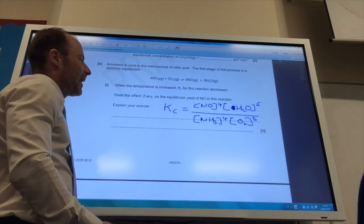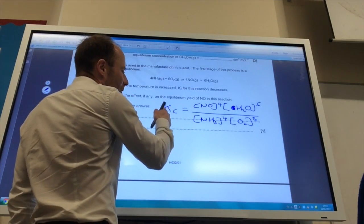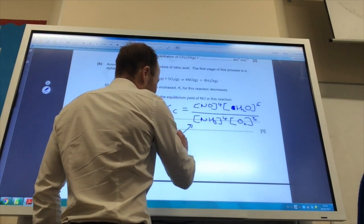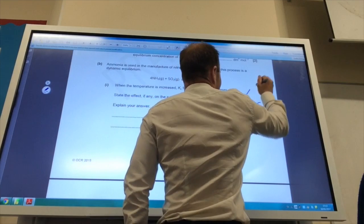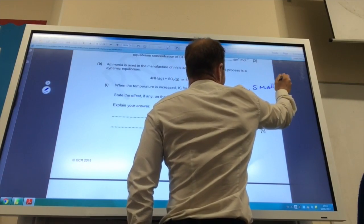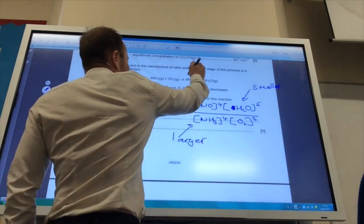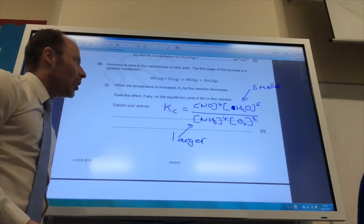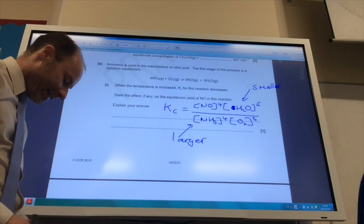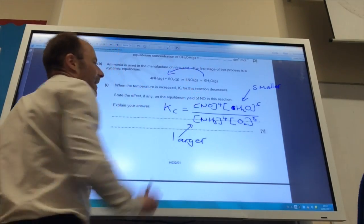Kc, they told me, has got smaller. If Kc's got smaller, it means that this has got larger, and that has got smaller. So if that's got smaller, it means that the amount of NO has decreased. So we can say the yield of nitrogen monoxide has decreased, and the equilibrium has moved to the left-hand side.